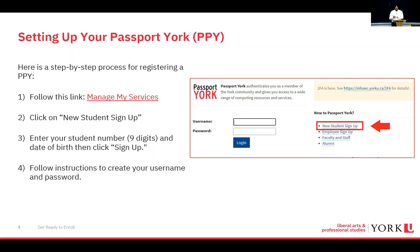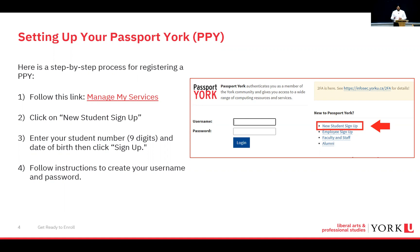You'll be selecting your username and setting up your Duo two-step authentication. It's important to set up your security correctly because your student financial services, student information, and social insurance number are all there — you need to protect that information. Once set up, it's helpful to select 'Remember Me' and accept your sign-in prompt so you don't have to go through the process every single time.